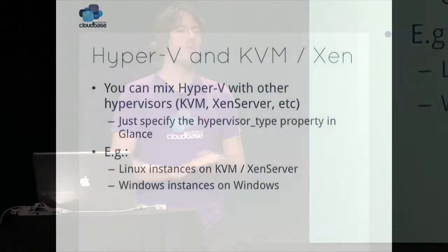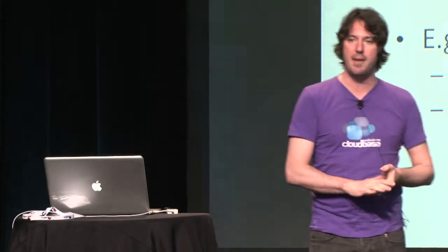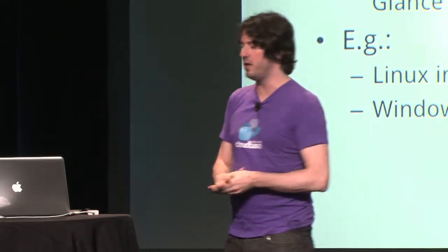The typical question we get is: can we use Hyper-V to run only our Windows workloads while using Xen, KVM, and so on to run the Linux ones? The answer is yes, definitely — that's what most of our customers are doing. You can just use the hypervisor type property in Glance when you create an image and specify that image goes on Hyper-V and that other image goes on Xen, KVM, or whatever. So if you have 50 servers with KVM and 50 with Hyper-V, you can partition the images in a very simple and easy way.